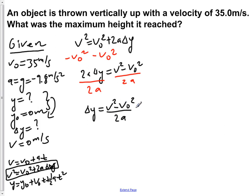Now we plug in the values that we're given. Final velocity is 0 meters per second, our initial velocity is 35 meters per second, and our acceleration is negative 9.8 meters per second squared.